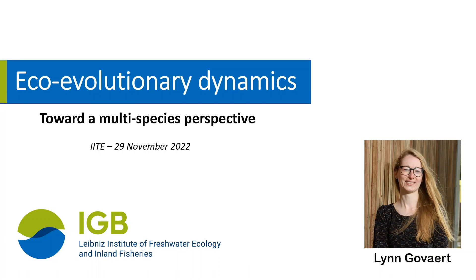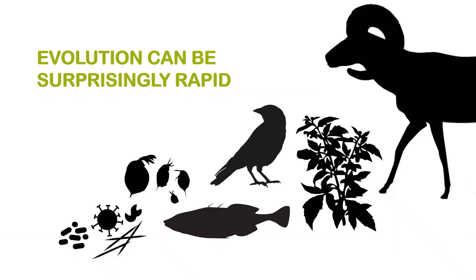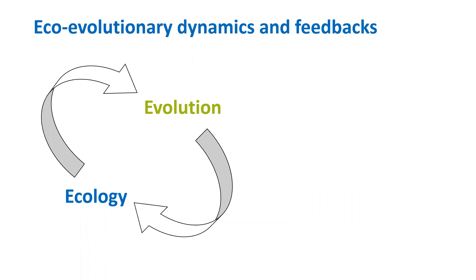Eco-evolutionary dynamics has really come from the awareness that evolution can be surprisingly rapid. Evidence of such rapid evolution has been found in smaller bacteria, zooplankton, fish, birds, but also larger mammals. Because evolution can be very rapid, it can also occur on ecological timescales and therefore interact with ecological processes, so we can get these dynamical feedbacks between ecology and evolution.